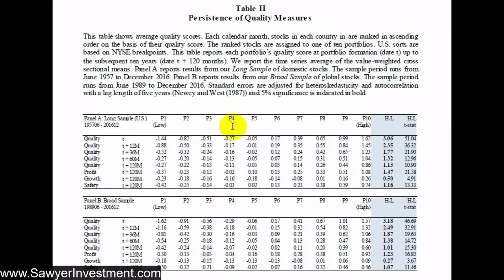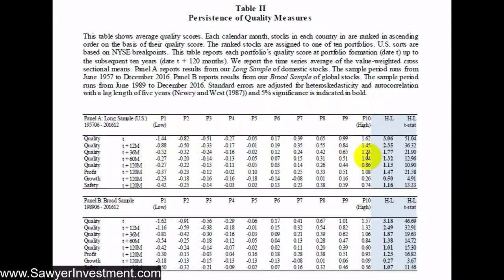The authors sorted the quality measure into deciles, with high quality stocks in the top 10th decile and low quality in the bottom. They then examined what the average quality measures looked like at 12, 36, 60, and 120 months into the future. They find that companies with high quality today tend to have high quality up to 10 years in the future, and the same holds for low quality companies. Quality appears to be persistent — high quality today predicts high quality in the future.